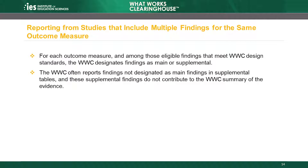Studies sometimes include multiple analyses of the same outcome measure. For example, the outcome may have been measured at different points in time, for different samples, or using different measurement approaches. In these cases, the WWC needs to determine which findings will contribute to its summary of the evidence in the study or intervention.